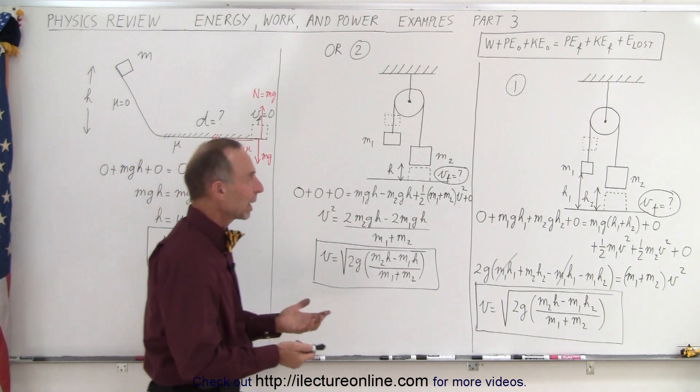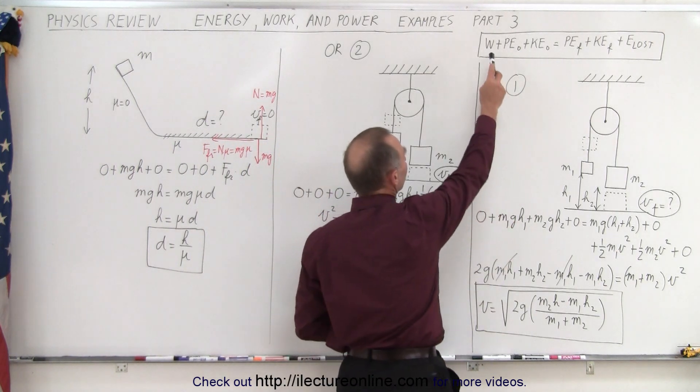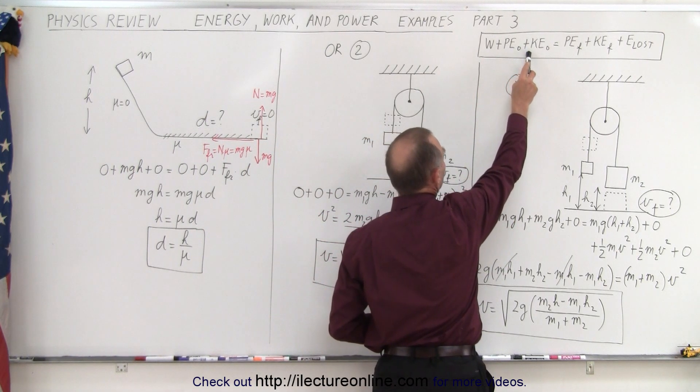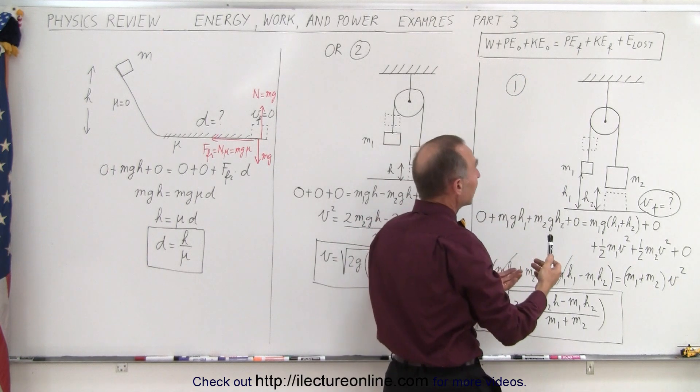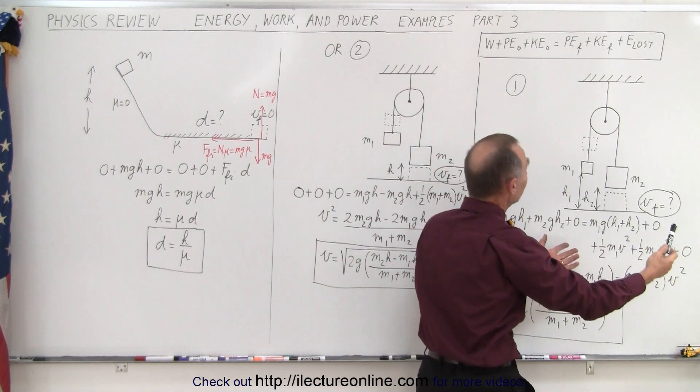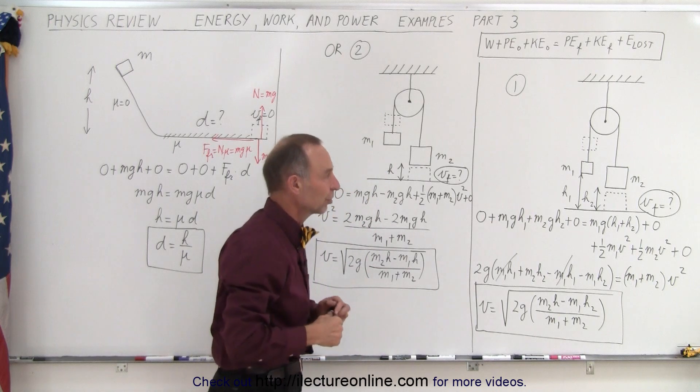We have an equation that is balanced. On the left side we have the work put into the system plus the initial potential energy plus the initial kinetic energy, and must equal the potential energy and the kinetic energy at the final situation plus whatever energy we might have lost due to friction.